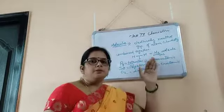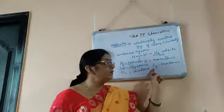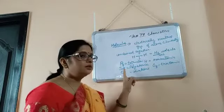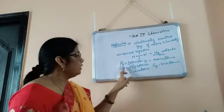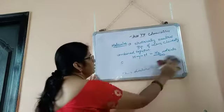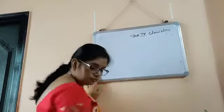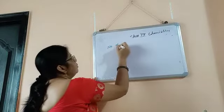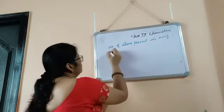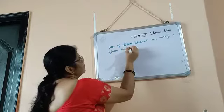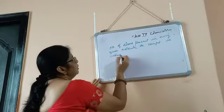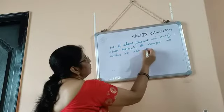A molecule can be made of how many atoms? For example, ozone uses 3 atoms, phosphorus molecule P4 uses 4 atoms, sulfur S8 uses 8 atoms. The number of atoms present in any given molecule or compound is called its atomicity.